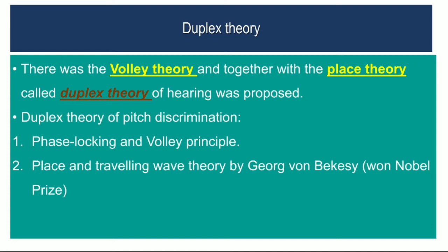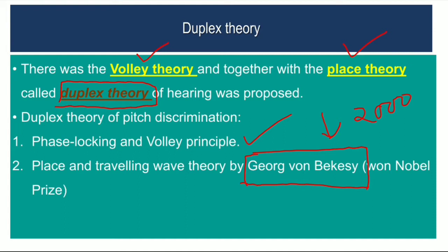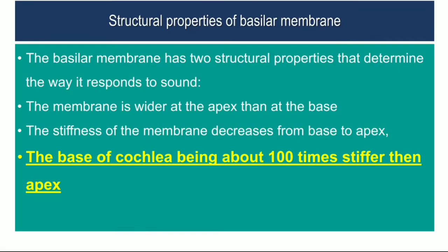Next is the duplex theory, which is a combination of the place theory and the volley theory. The duplex theory contains the volley principle for frequencies less than 2000 Hz, as well as the place theory, also called the traveling wave theory, given by von Békésy. It is a very well accepted theory nowadays. Before going into the von Békésy theory, we should know the structural properties of the basilar membrane.